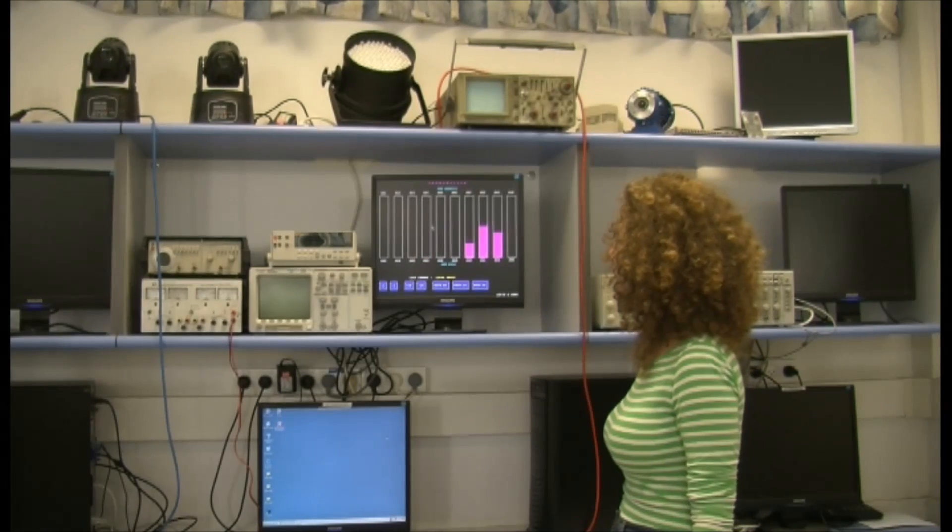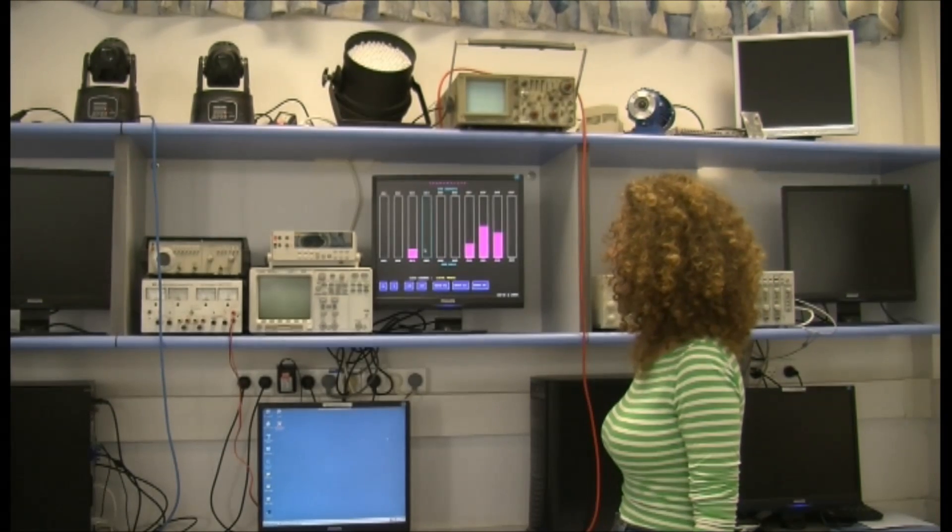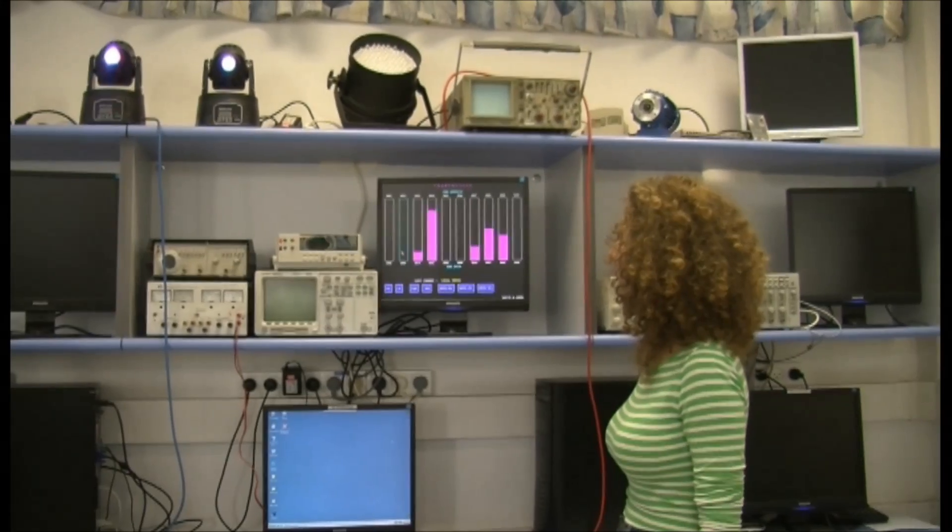Bar graph three is the enable. Bar graph four is the color. One and two, the horizontal and vertical movements.